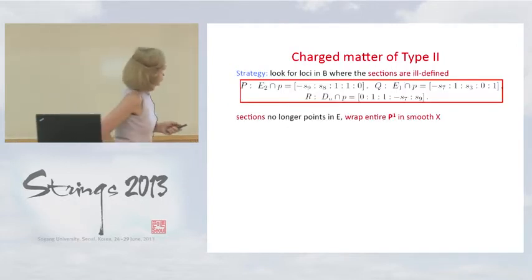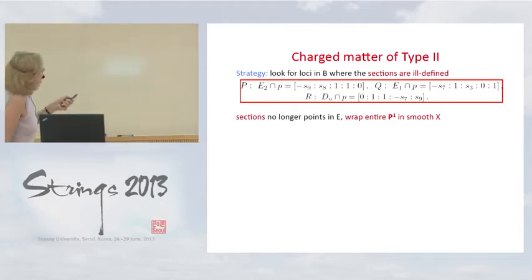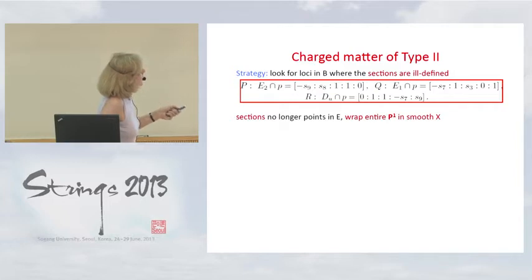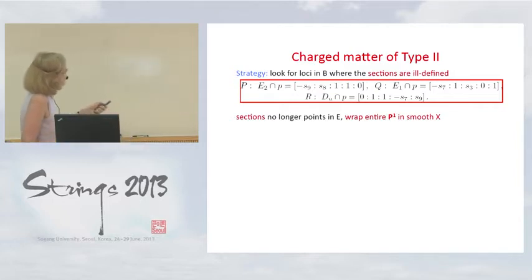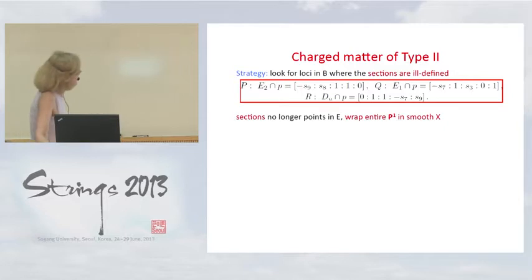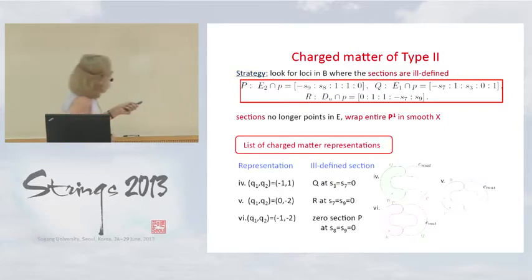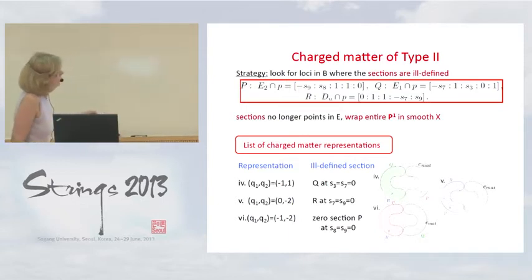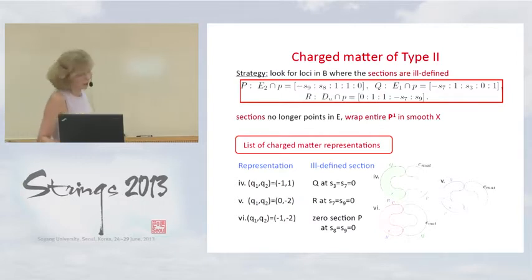There are other types of matter as well. It turns out that these rational points, when promoted to sections, are actually ill-defined at certain locations of the S9, S8, and other sections. When we look at the loci of zeros of S9 and S8, the fiber associated with the P-point is degenerate. In this case, the section no longer corresponds to a point in the elliptic curve but starts wrapping the whole P1 in the resolved Calabi-Yau. The interpretation of the matter at these singularities has charges that are non-standard and non-perturbative.